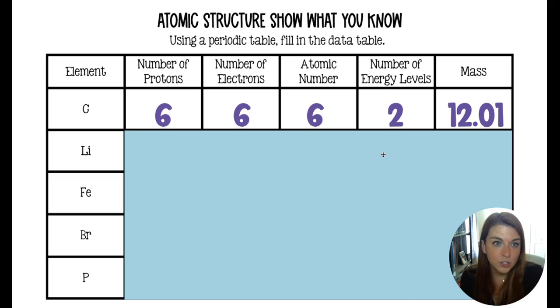So just to remind you, carbon's atomic number is six. It is number six on the periodic table, meaning it has six protons and six electrons. Because carbon is in the second row of the periodic table, I know that those six electrons are organized in two energy levels, and its mass on my periodic table is 12.01.